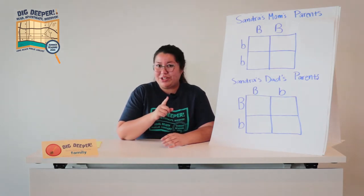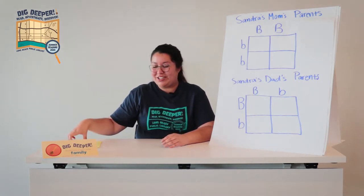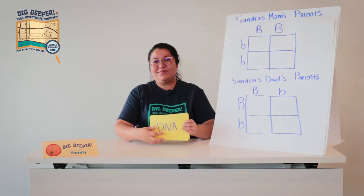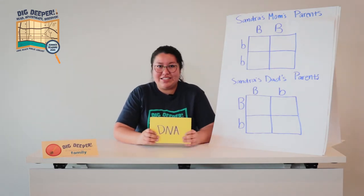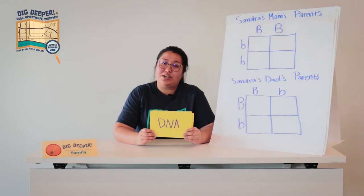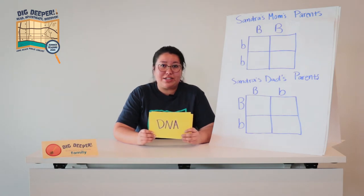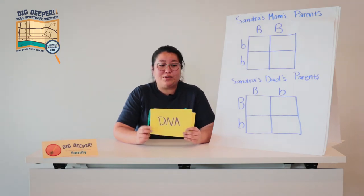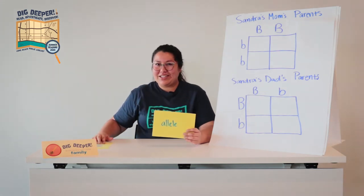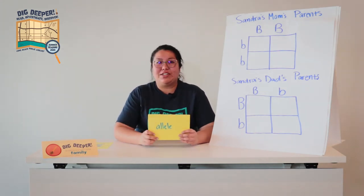But first, a few keywords to help us get started. DNA is what makes you you. It's what determines how tall you're going to be, what your eye color is going to be, and even if you can roll your tongue like a taco like that.